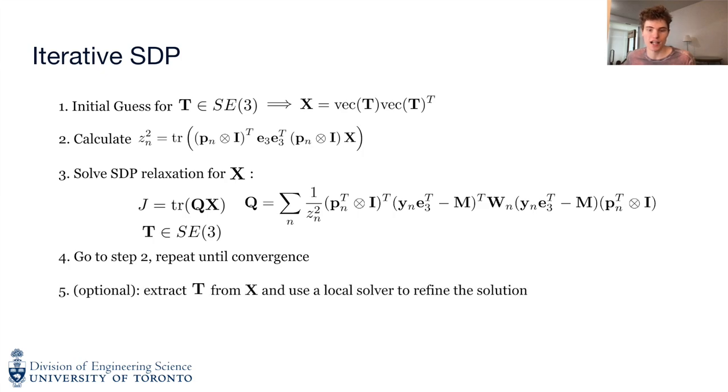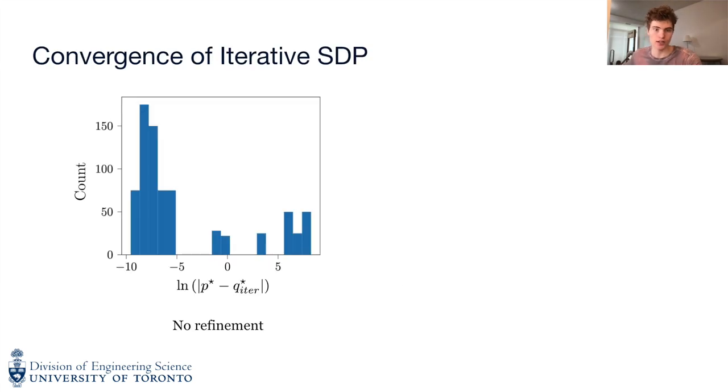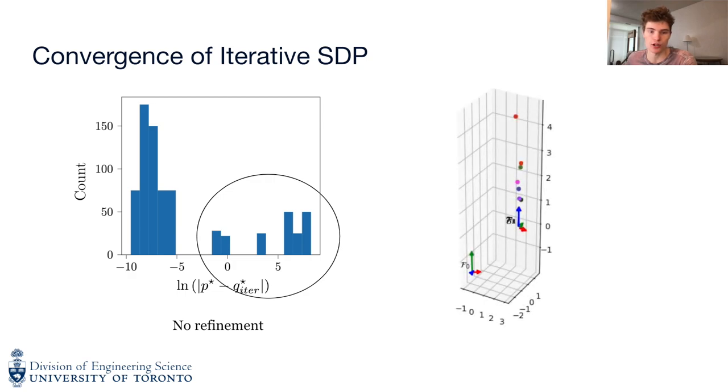Finally, after convergence or a maximum number of iterations, we extract T from the last SDP solution and optionally refine with a local solver. This histogram plots the gap in the reprojection error between the global minima and the output of the iterative SDP algorithm, without refinement from a local solver. The iterative algorithm does not find the globally optimal solution all the time, and the main failure case is when there is a large difference in depth between the points. This is likely because, when solving the back projection problem, the point with large depth contributes much more to the cost than it otherwise would in the reprojection error problem, moving the solution outside the basin of convergence.